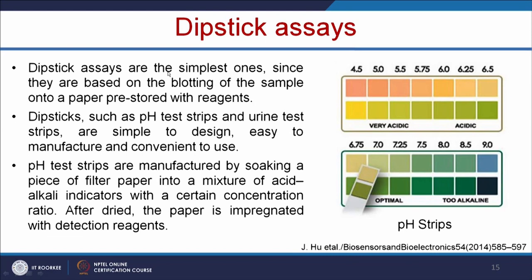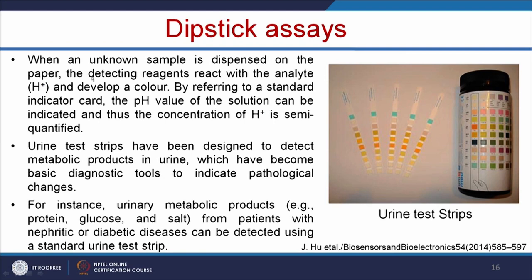The first type is dipstick assays. These are the simplest, based on blotting of the sample onto paper pre-stored with reagents. Examples include pH test strips or urine test strips — they are simple to design, easy to manufacture, and very convenient to use. pH test strips are manufactured by soaking a piece of filter paper into a mixture of acid and alkali indicators at a certain concentration ratio. After drying, the paper is impregnated with detection reagents. When an unknown sample is dispensed on the paper, the detecting reagents react with the analyte and develop a color. By referring to a standard indicator card, the pH value can be indicated and the concentration of H⁺ ions semi-quantified.